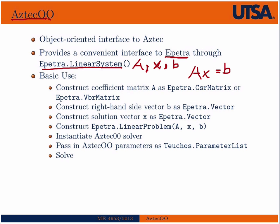So the basic use for AztecOO is to construct a coefficient matrix A as either a CRS matrix or VBR matrix, construct both a right-hand side vector b and a solution vector x as Epetra vectors, of course distributed, and construct an Epetra linear problem like I've shown here. Instantiate the AztecOO solver, pass in any parameters that you want to use as a Teuchos parameter list, and then solve. So I'll give you an example of this part of the basic use features here. Everything else should be known already.